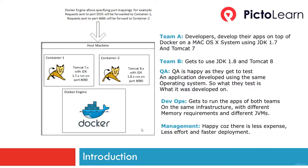So how did Docker solve the problem? Container 1 runs Tomcat 7 with JDK 1.7 and container 2 runs Tomcat 8 with JDK 1.8, both on port 8080 internally. Team A developers can develop on Mac OS X using JDK 1.7 and Tomcat 7 with consistency across environments. Team B gets JDK 1.8 and Tomcat 8 even while sharing servers with Team A. QA is happy because they test what was developed on the same OS.